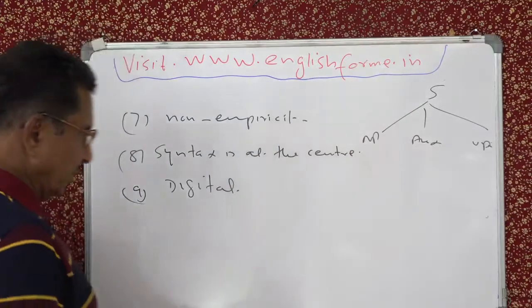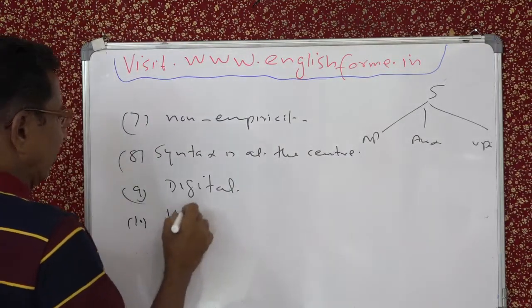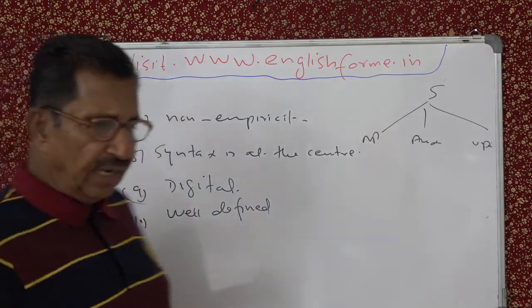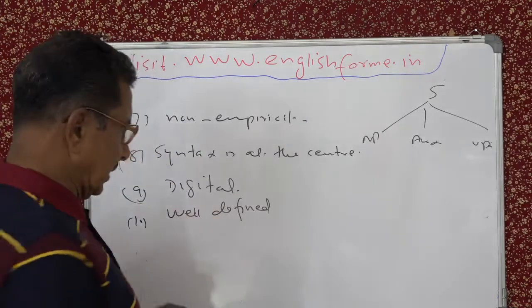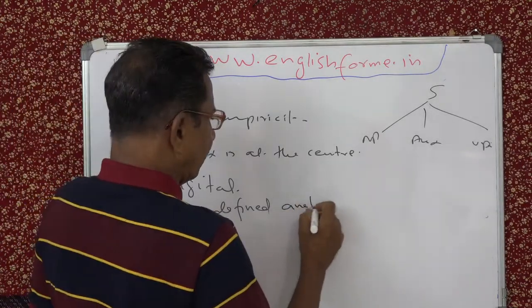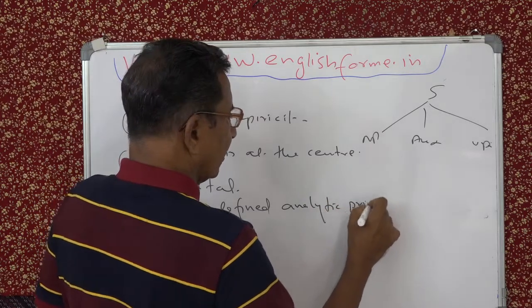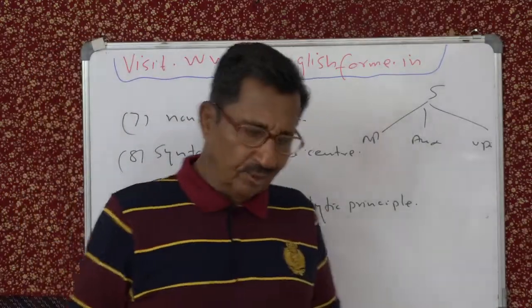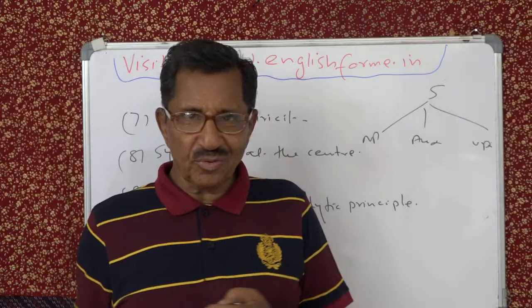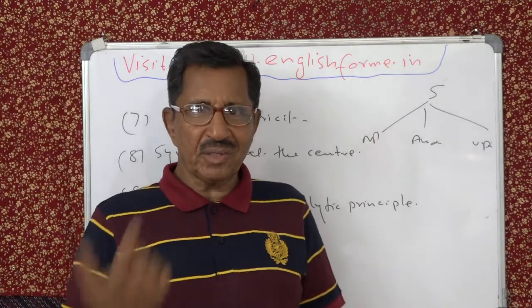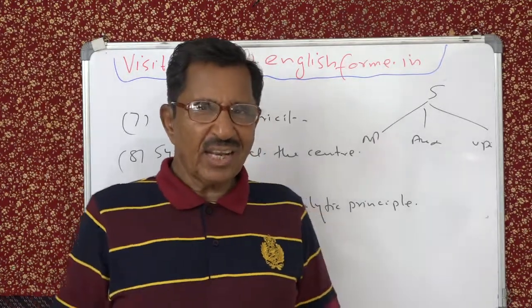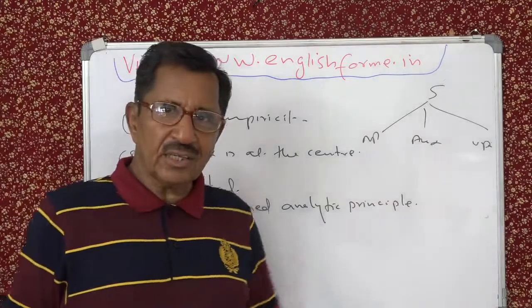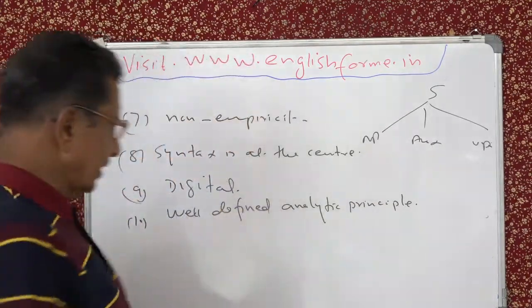The tenth point is well-defined analytic principles. We saw one just now — the SAI rule, then the question word switch rule, then the NP switch rule where NP1 becomes NP2 and NP2 becomes NP1. It is very clear when you convert a sentence to negative or passive — there is no doubt about it.